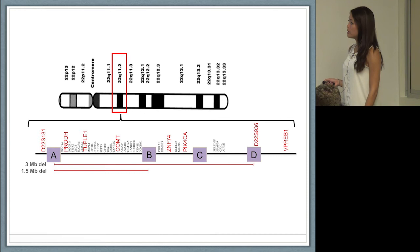Here's a schematic of chromosome 22. The assays in red, or the font in red, are the assays that we chose. I chose them based on their location to discriminate between the 3 and the 1.5 megabase deletion.